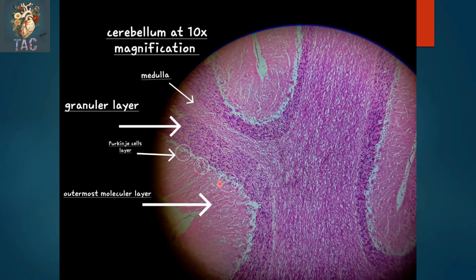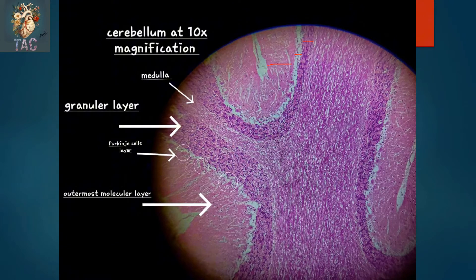The first slide today is that of the cerebellum. You can see this area is the cerebellar gray matter and in the center you can see the white matter. This gray matter consists of three layers: the outer molecular layer, the middle layer of Purkinje cell fibers, and the inner granular layer.